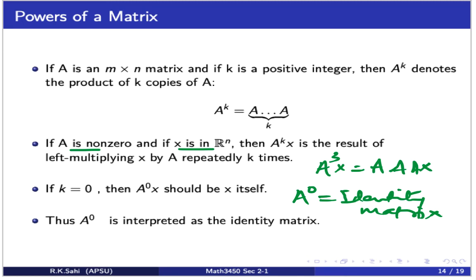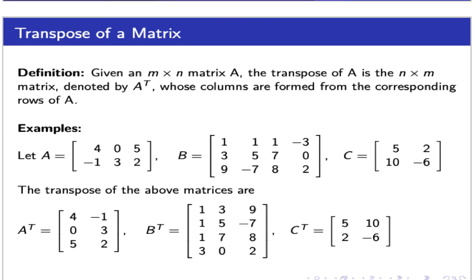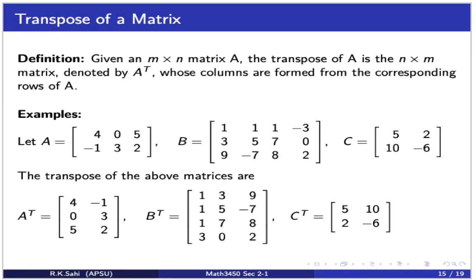Now let's look at the transpose of a matrix. If we are given an m by n matrix A, the transpose is an n by m matrix denoted by A^T, which is formed by switching the rows to columns and columns to rows of the original matrix.